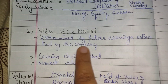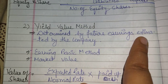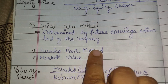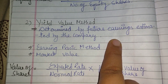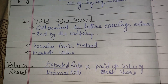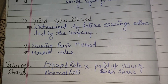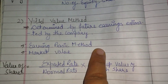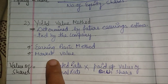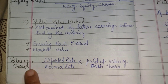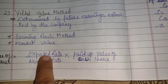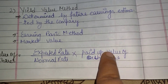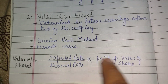Moving to the second method — the Yield Value Method. In the Yield Value Method, we determine share value based on future earning estimation by the company. What we determine here is based on future earnings.